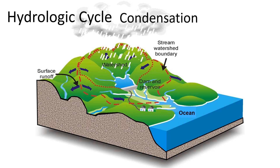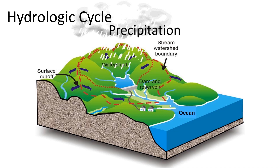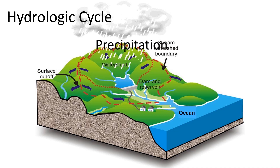The water vapor will then condense and form water droplets, creating clouds. The clouds will also continue to move across the land and drop their stored water in the form of rain, snow, or hail. This is called precipitation.